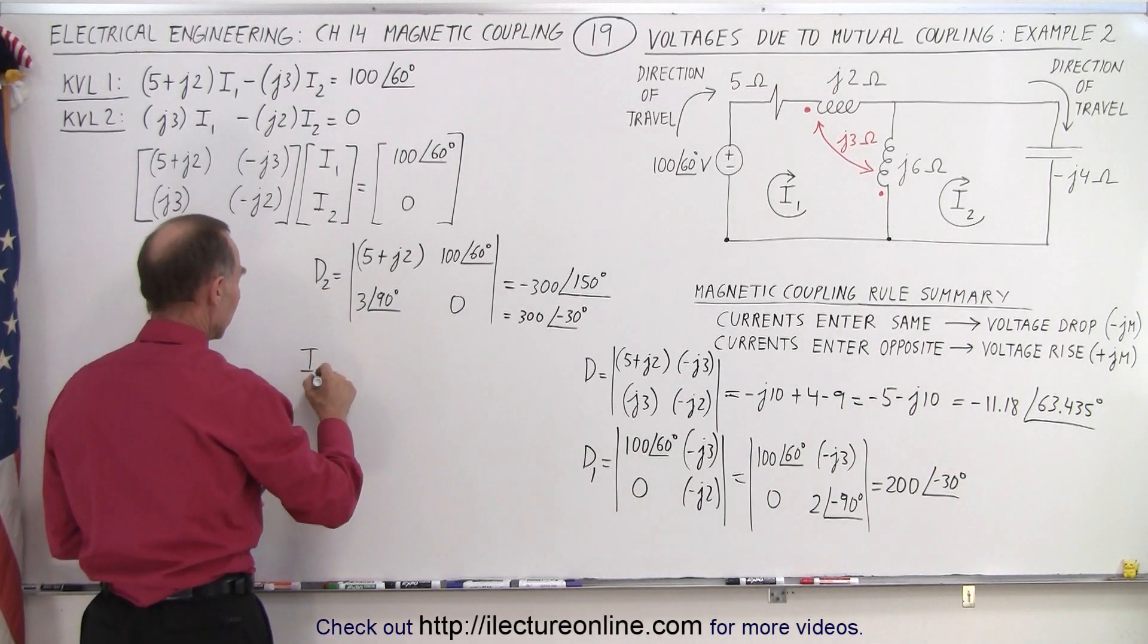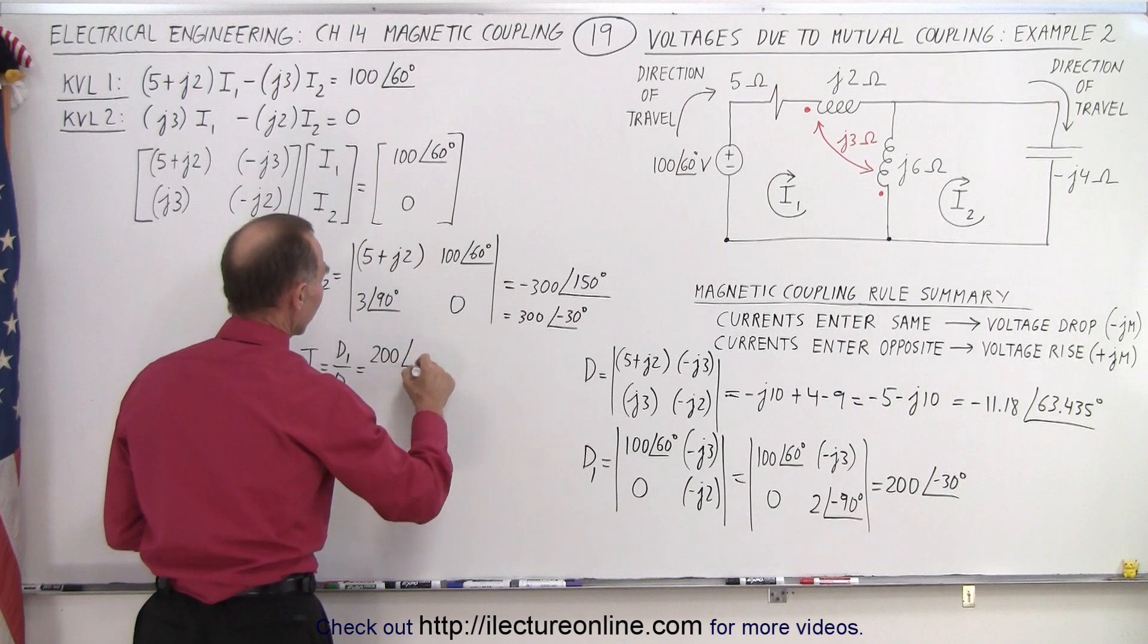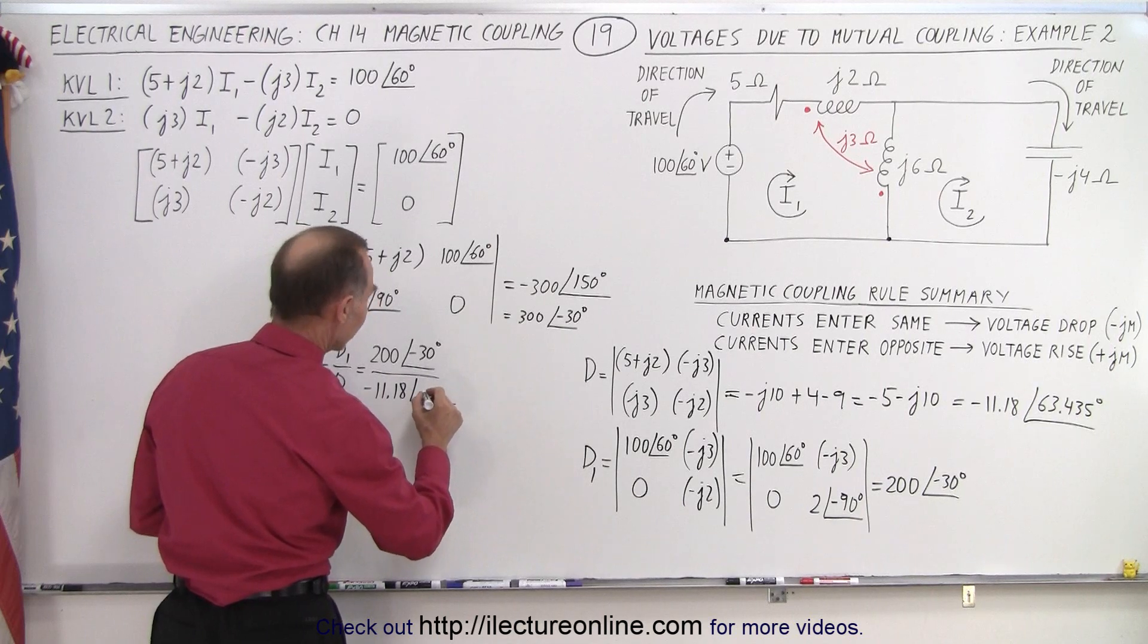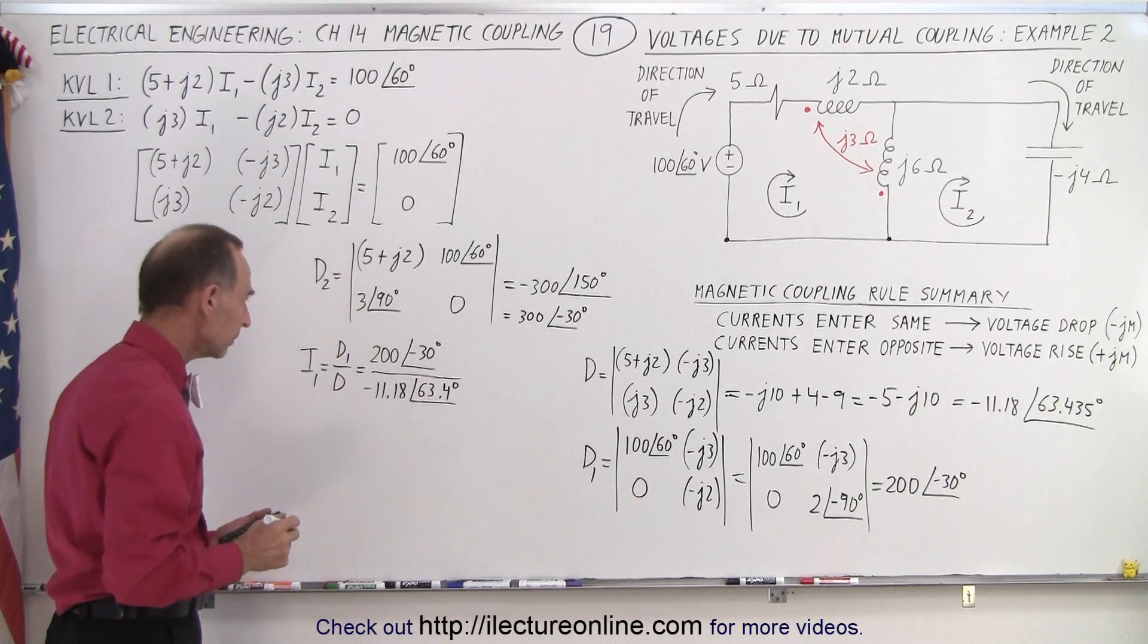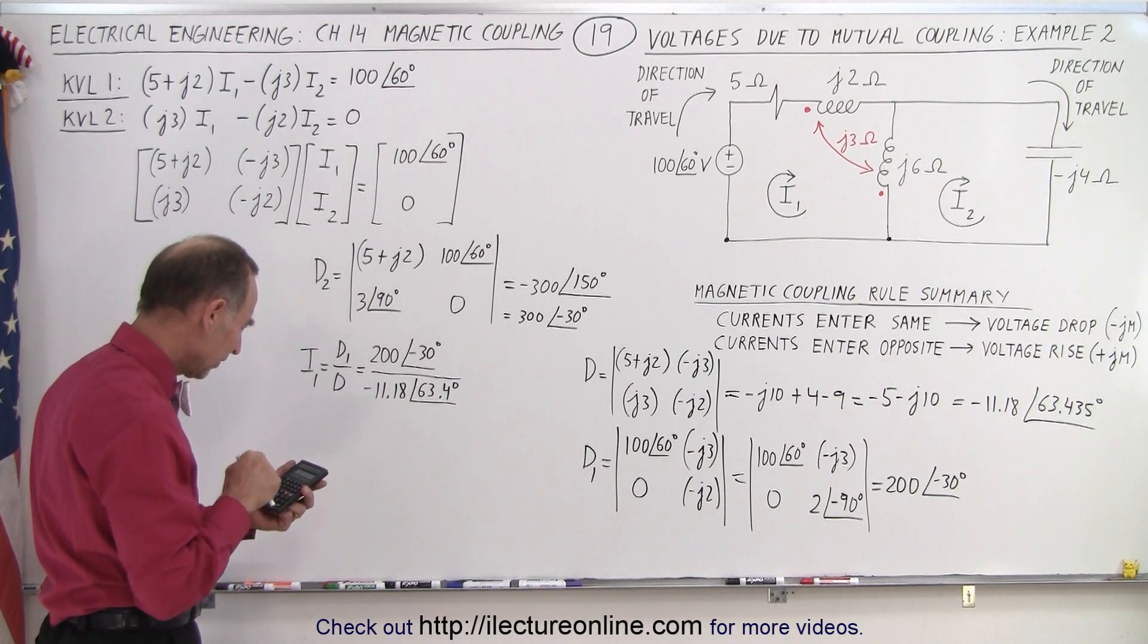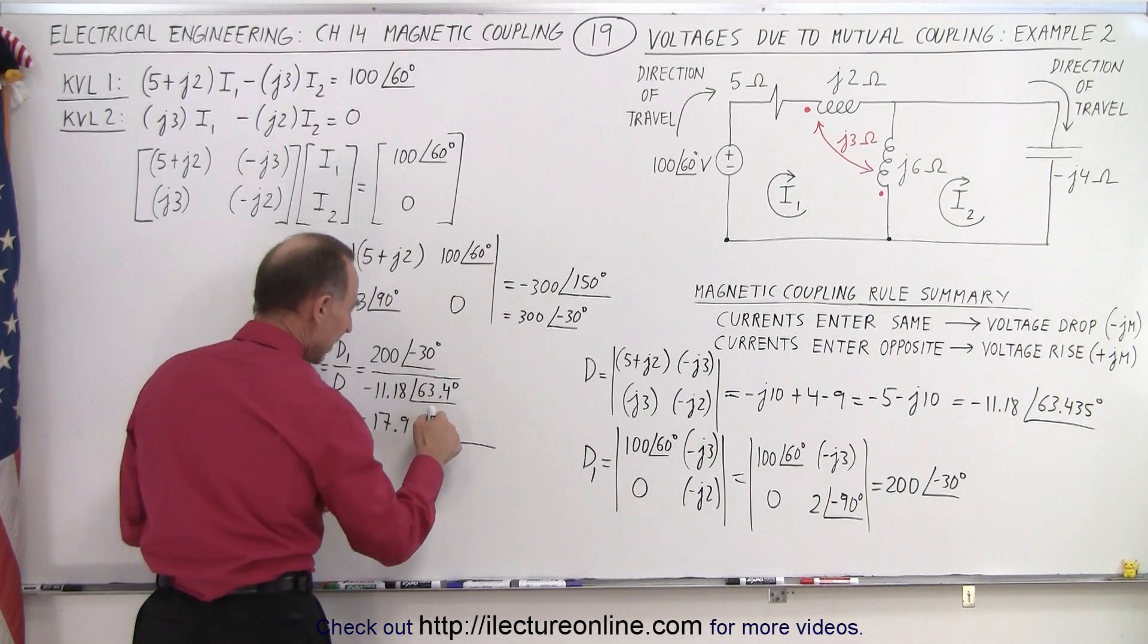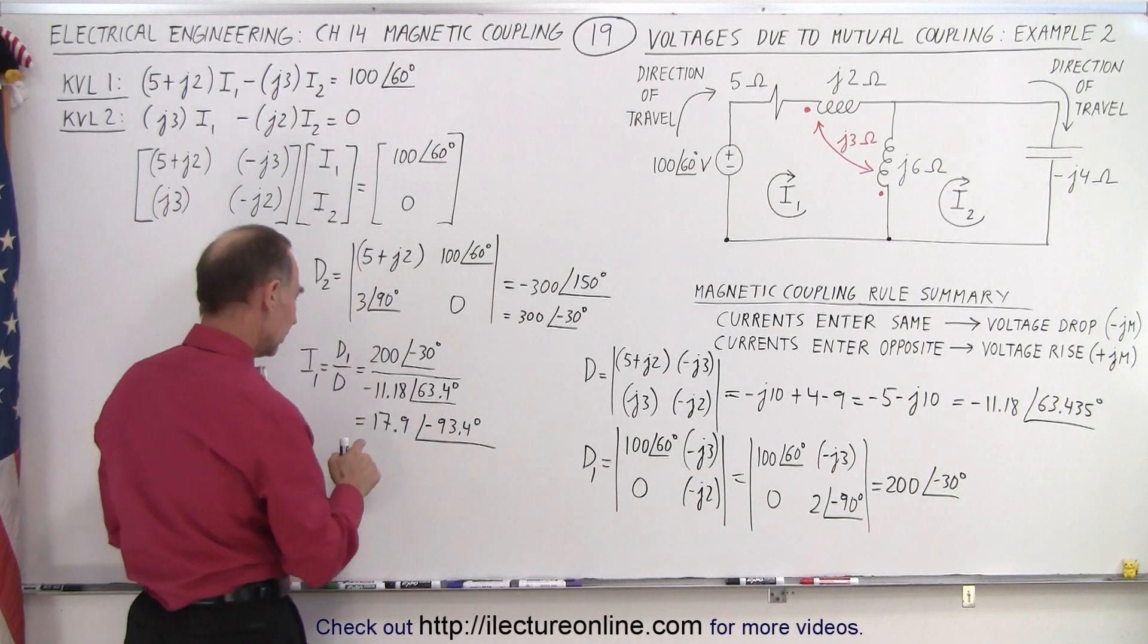Now I'm ready to find the currents. I1 is equal to D1 over D. D1 was 200 with a phase angle of minus 30 degrees, divided by D, which is a minus 11.18 with a phase angle of 63.4 degrees. What's that equal to? So we have 200 divided by 11.18 negative, that's equal to negative 17.9 with a phase angle of minus 30 minus 63.4, that would be minus 93.4 degrees.